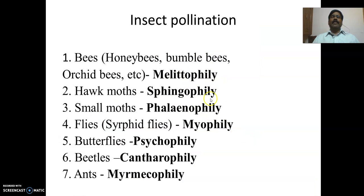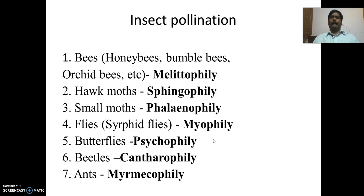This terminology is very important as far as cross pollination by insects is concerned. If cross pollination is done by bees it is known as melitophily; by hawk moths it is sphingophily; by small moths it is phalaenophily; by flies it is myophily; by butterflies it is psychophily; by beetles it is cantharophily; by ants it is myrmecophily. This terminology is very important for your short-answer questions.